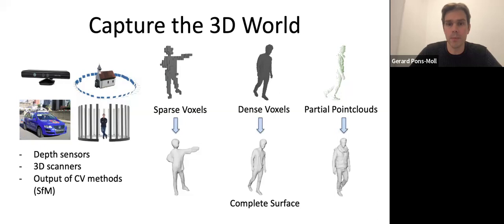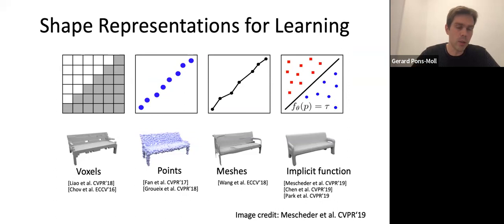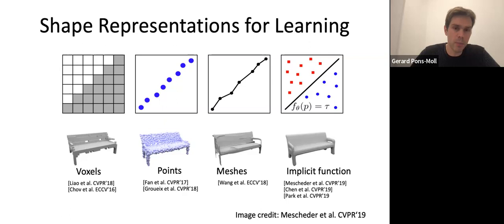For this it is very important to choose a representation carefully. People have used, for example, voxels, but we all know that voxels are limited by resolution and when you train with voxels, you have memory problems. You could use points which are much lighter, but then you cannot easily render them. Or you could use meshes, but meshes are limited in topology — you typically have to decide what topology you want to represent beforehand.